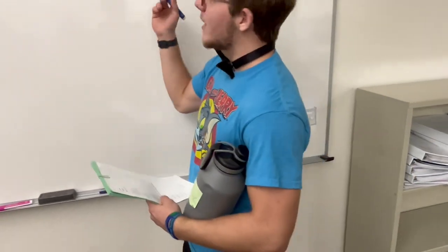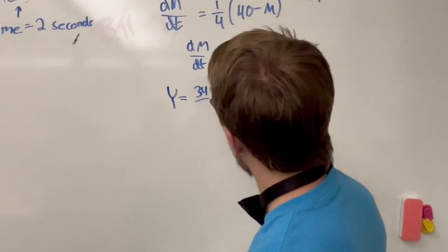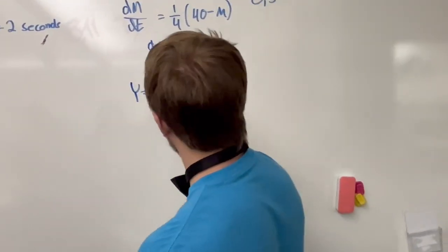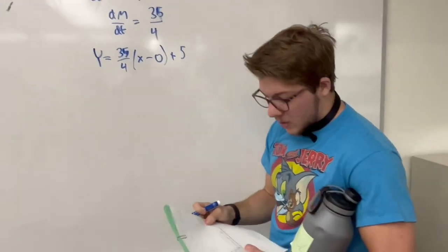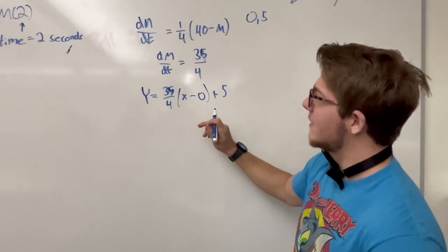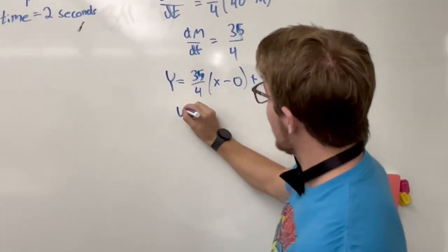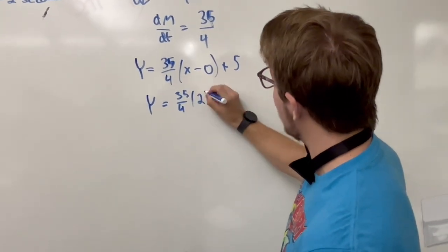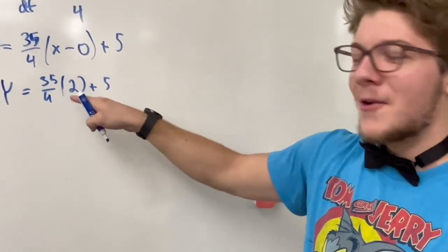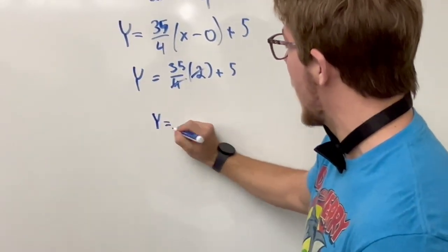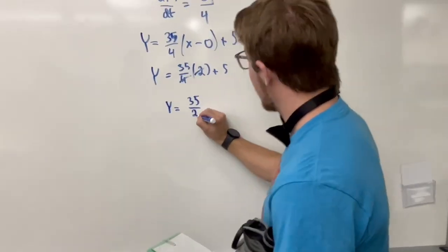From there, we are going to plug it into a point-slope formula. So y equals the slope of 35/4, and then x minus our 0, plus 5. We are finding that at time t equals 2 seconds, we plug it in: y equals 35/4 times 2, plus 5.